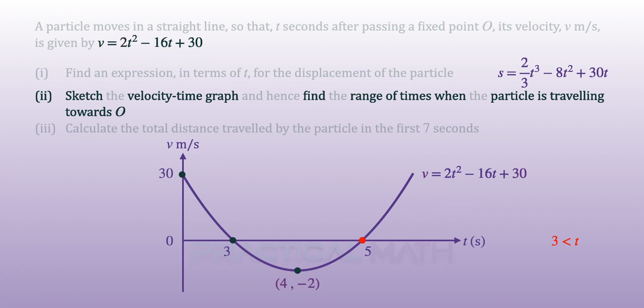Similarly, at t equals 5, velocity is also 0, implying that there is a change of direction, but the particle is now moving away from O. So, the range will end when t is less than 5. Therefore, between t equals 3 and t equals 5, the particle is moving towards O.